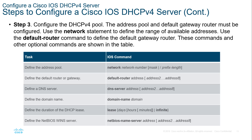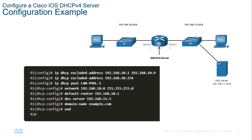Here's an example with two excluded address ranges: 192.168.10.1 through 192.168.10.9, and 192.168.10.254 — those addresses will not be issued. The pool is named LAN pool 1. We define the network with subnet mask, the default router, the DNS server, and the domain name. This configures the device to skip excluded addresses and provide default gateway and DNS information to clients.